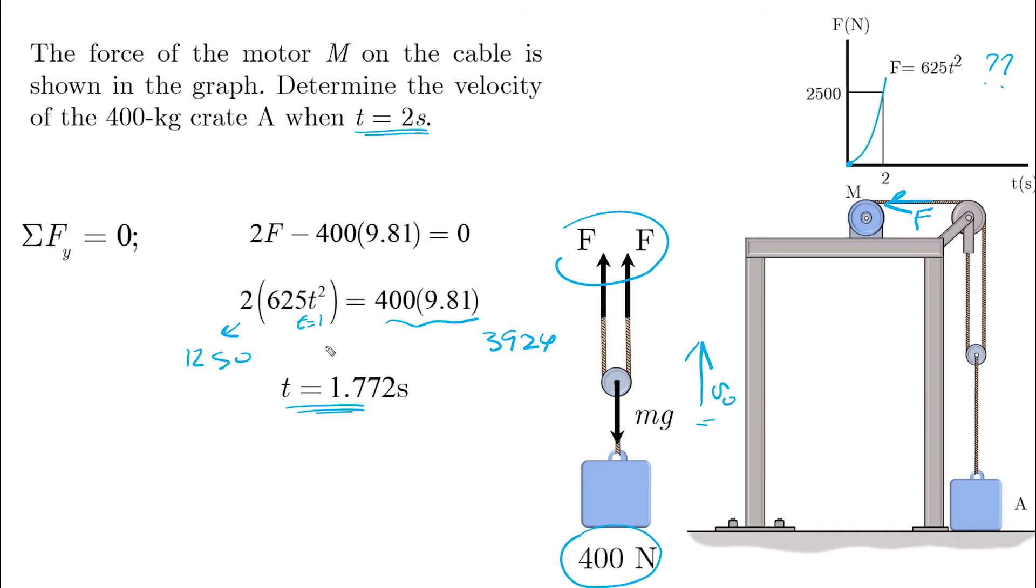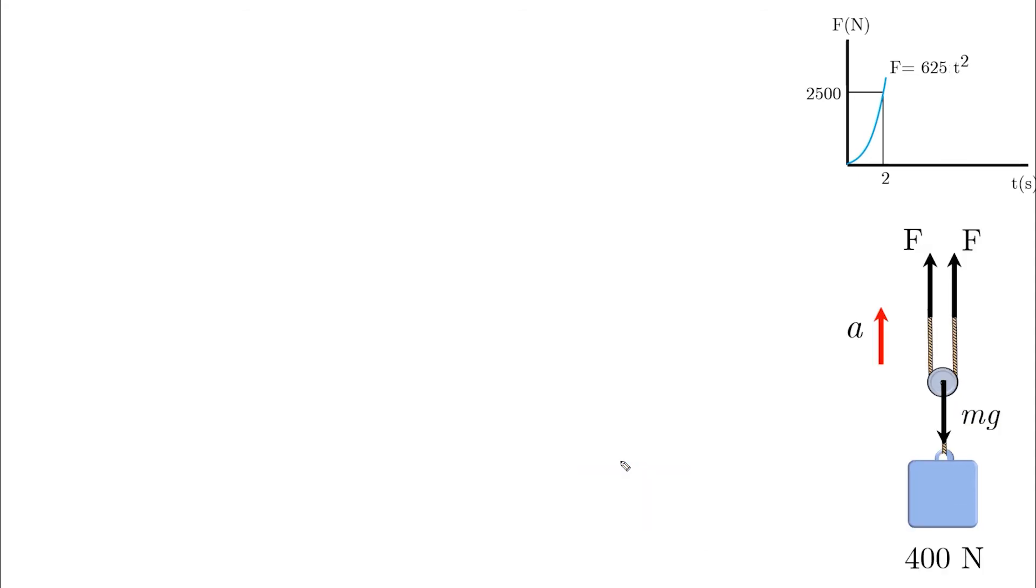Just after this time, let's say 1.773 seconds, the left hand side, which are the two forces, becomes larger than the weight. This is when we have our initial velocity and the block starts to move up. Now that the system starts to move, we have our summation of forces equals ma. Same equation. The result is acceleration as a function of time, which makes sense.